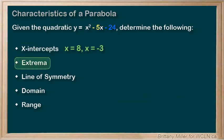To find the extrema, we need to recall that the x value of the vertex will be -b divided by 2a. Negative negative 5 divided by 2 times 1 is just 5 divided by 2, which is a nice 2.5.